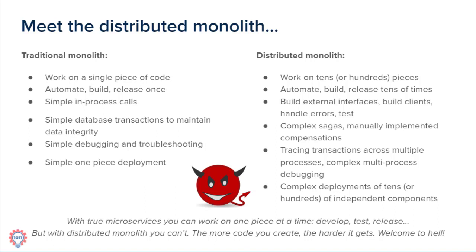Before, if something happened and you needed to roll back a transaction, you just rolled it back in the database — easy and simple. With microservices, you need to implement complex sagas, track the state of your transaction, and on failure, roll back all changes with manual compensation transactions. If you need to debug, now you're debugging multiple processes and tracing calls between them.